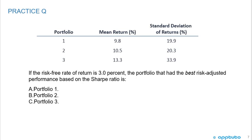The last practice question for this LOS is on the Sharpe ratio. You're given three portfolios with their mean returns and standard deviations. With a risk-free rate of 3%, Portfolio 1 has a mean return of 9.8% and standard deviation of 19.9%; Portfolio 2 has a mean return of 10.5% and standard deviation of 20.3%; Portfolio 3 has a mean return of 13.3% and standard deviation of 33.9%. Which portfolio has the best Sharpe ratio?